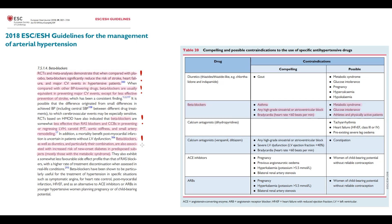Another problem is that beta blockers in combination with diuretics significantly increase the risk of new-onset diabetes, especially in patients with metabolic syndrome who are already predisposed to diabetes. Blockage of beta receptors can cause constriction of airways, which is a problem in patients with asthma. So beta blockers are contraindicated in patients with asthma and high-grade heart blocks, and we should be very careful with them in patients with metabolic syndrome and glucose intolerance.